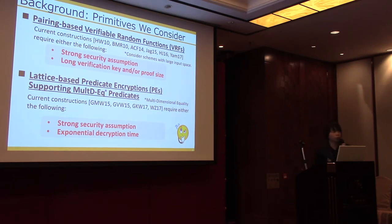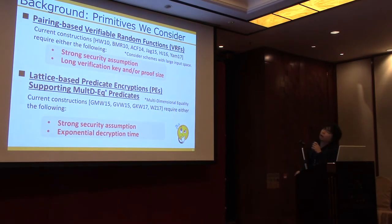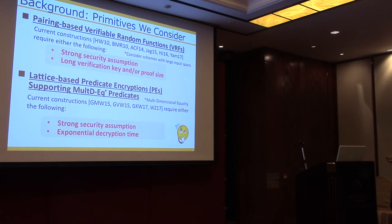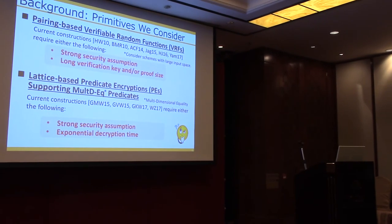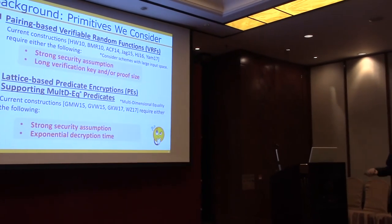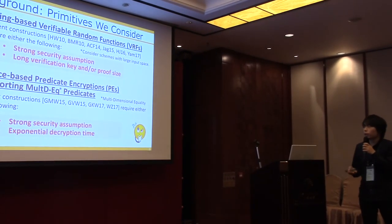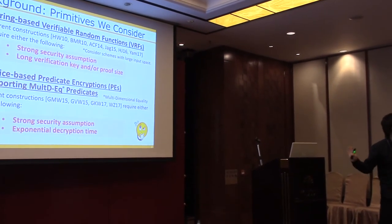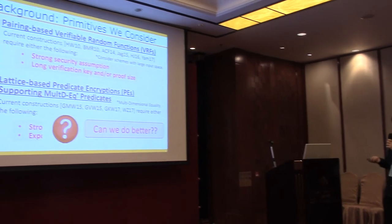There are two primitives we focused on. The first is pairing-based verifiable random functions. The current situation is that there are a lot of constructions but we either require a strong security requirement or a long verification key and/or proof size. The other primitive is the lattice-based predicate encryption scheme supporting the so-called multi-dimensional equality predicates, which currently requires a strong security assumption or exponential decryption time. So a natural question is: can we do better?